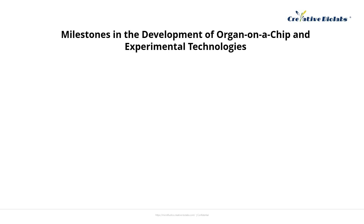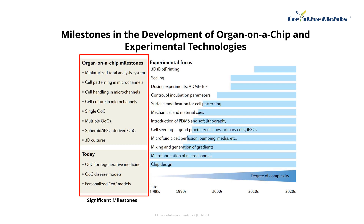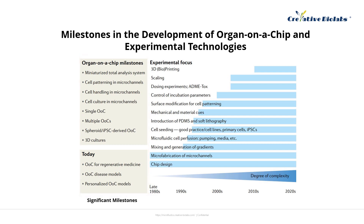This picture marks a milestone in the development of organ on a chip and experimental technology. It summarizes the important inventions of the past two decades and explains how these inventions have promoted the development of the OOC field. The picture on the left lists important events, while the picture on the right highlights novel experimental techniques and their development time.